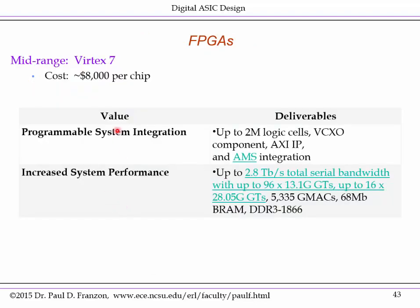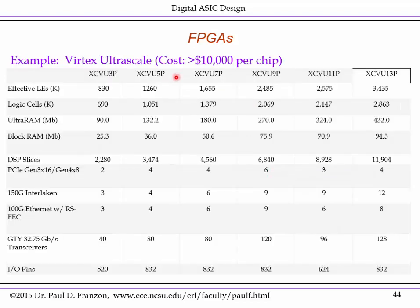You can go to higher-end FPGAs — the mid-range Virtex range. Cost goes up quite quickly to around $8,000 per chip, but you get up to 2 million logic cells — about an order-of-magnitude increase in digital density — though still only a few million logic gates equivalent. There's really no volume savings here. Then there's the very high-end Ultrascale, costing more than $10,000 per chip, with more logic cells, features, and memory — but still nowhere near approaching the capabilities of the Maxwell GPU.